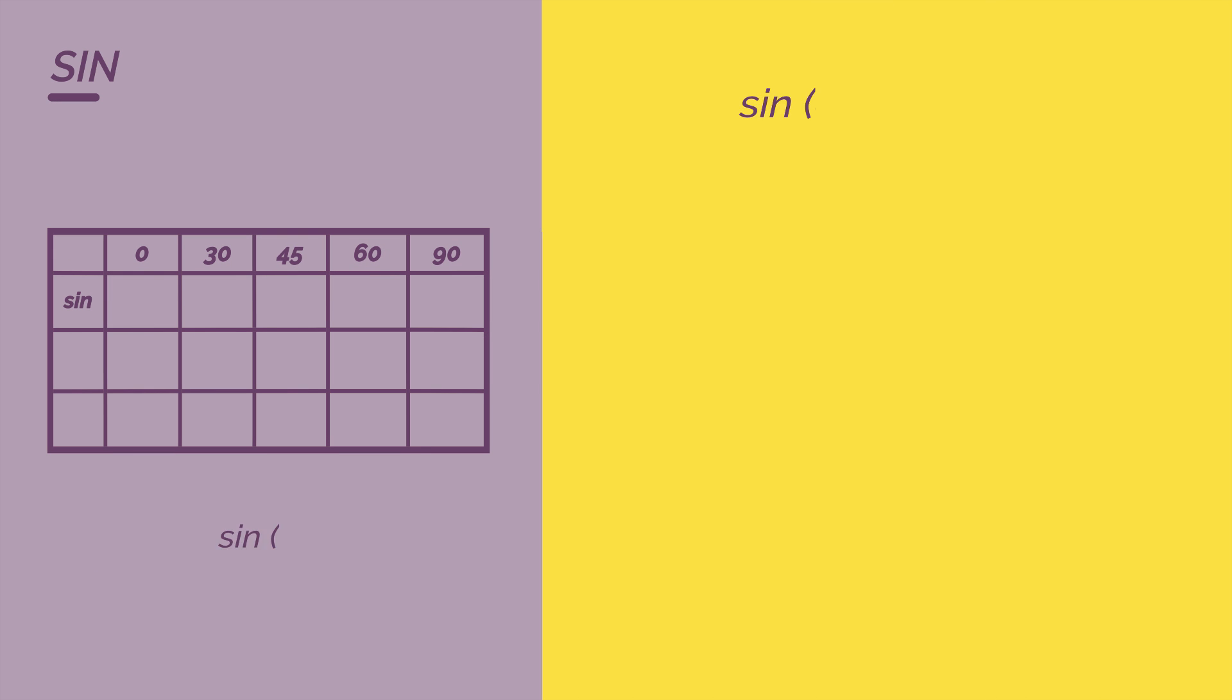All you need to remember is to divide by two and square root on top. Start from zero and work up. So sine zero degrees is root zero divided by two.